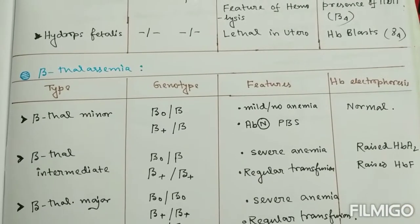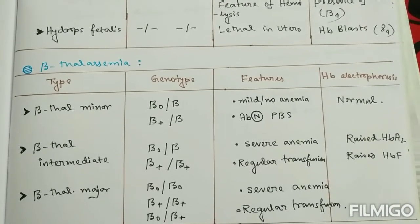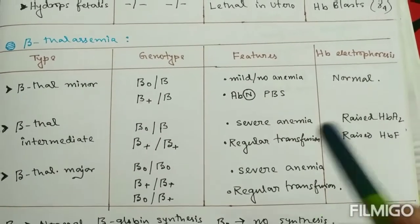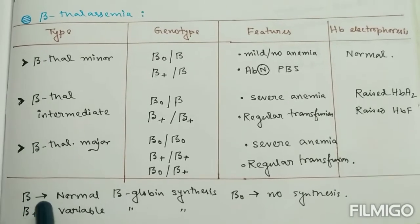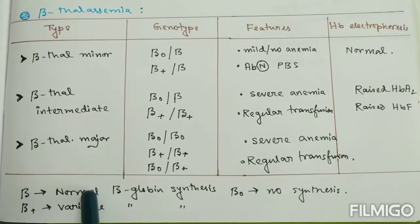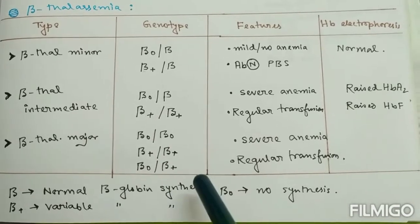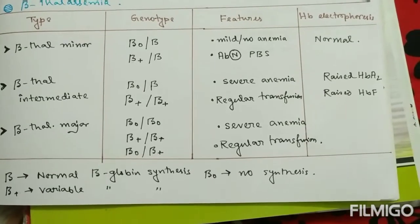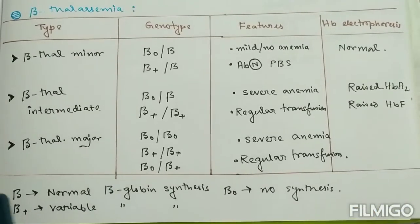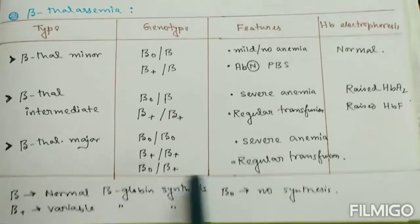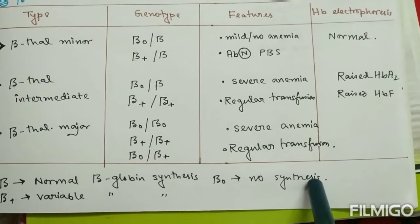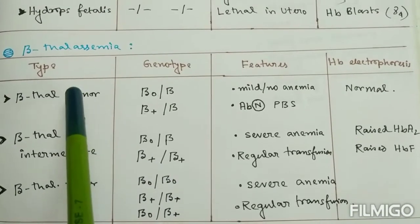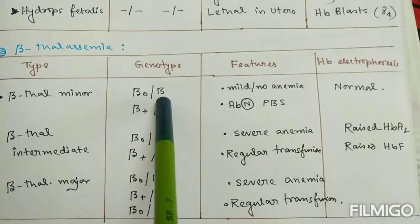Looking at the various types of beta thalassemia — minor, intermediate, and major — some notation is important: beta indicates normal beta globin synthesis; beta-zero indicates no synthesis; and beta-plus indicates variable (reduced) beta globin synthesis, since in beta thalassemia there is a defect in transcription or translation of the beta genes.